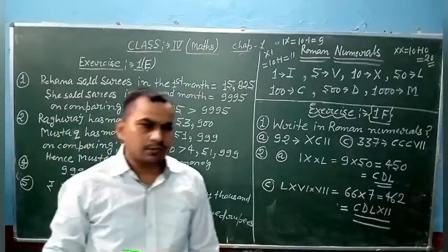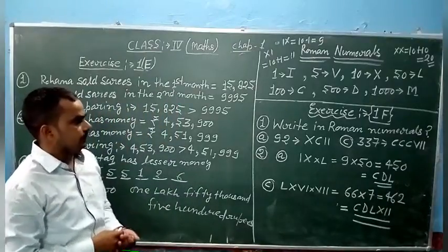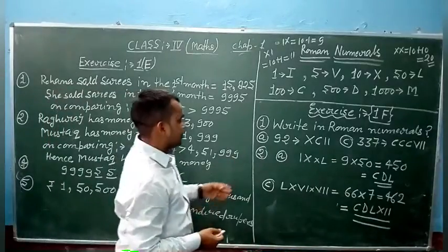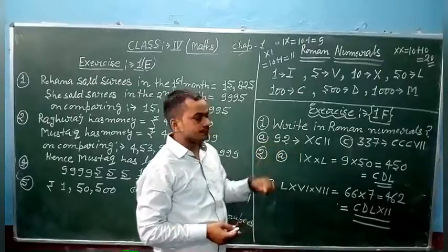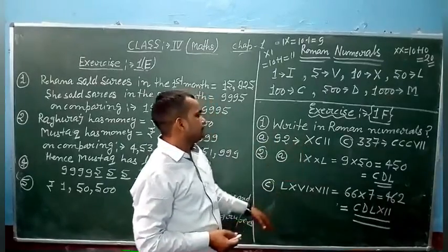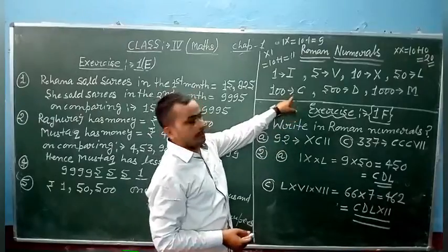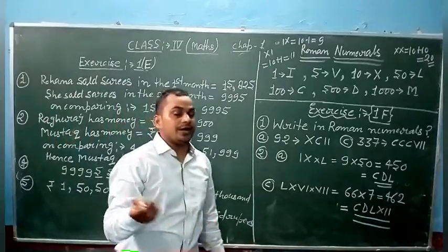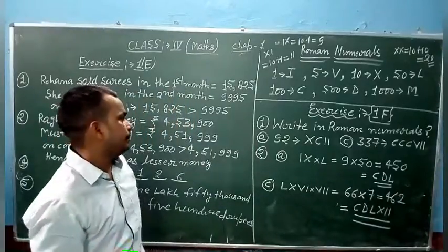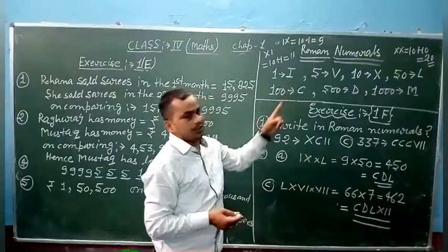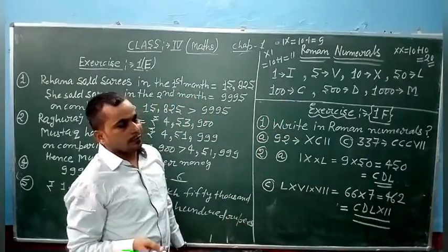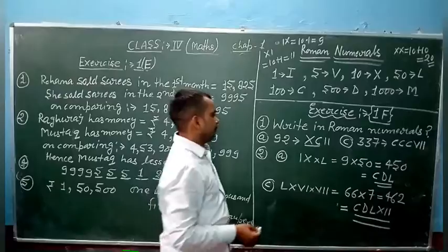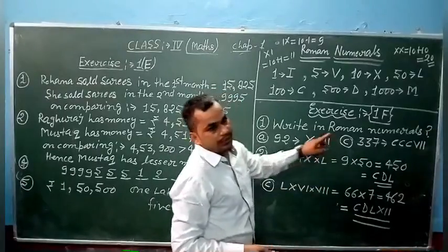So now we write in Roman numerals. What is 92? First, you have 92. So 100 is C. 100 minus 10 is 90. So XC is 90. Then 2. So I, I. 92 is XCII.